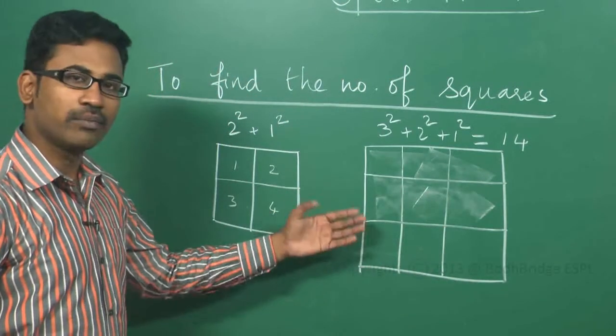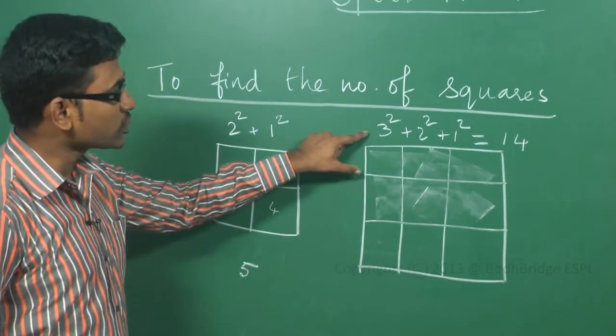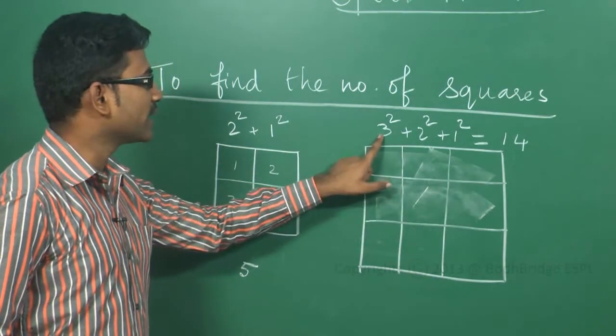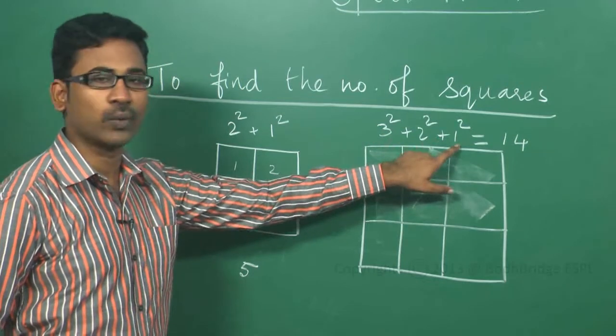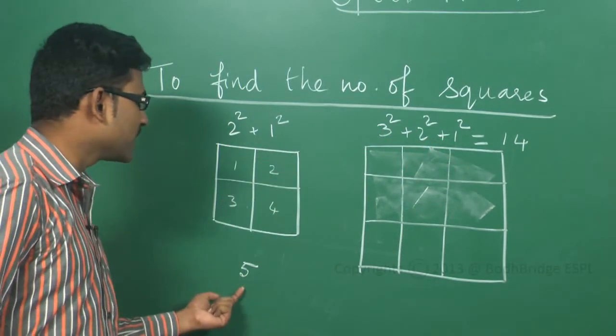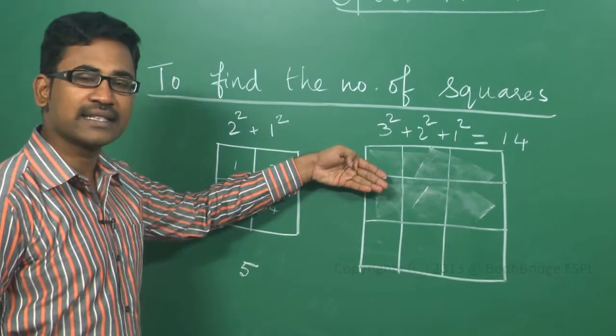Instead of counting, it will make you confused. So, you can use the shortcut. You have to count what is the number of squares in a row. Then, you have to make it 3 square, 2 square up to 1 square. If it is 2, 2 square plus 1 square. That is giving the answer 5 and for this, the answer is 14.